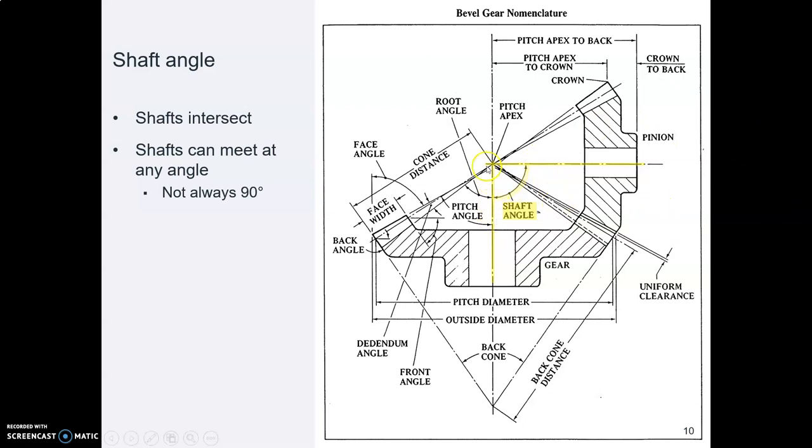However, they do not have to intersect at a 90 degree angle. In this picture, they happen to be 90 degrees, but they could be some other angle. And that's the cool thing about bevel gears—you can change direction and go around corners at darn near any angle.